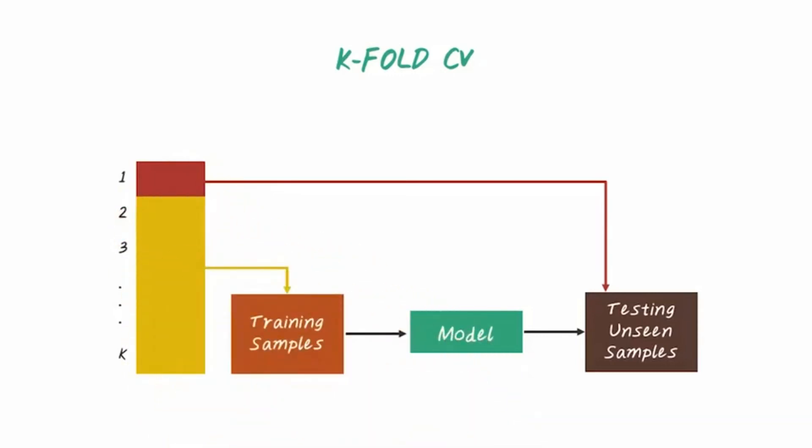For example, fold one would be used as the validation set, and the remaining folds will be used as a training set to build the model. Then we use fold two as the validation set, the remaining folds as the training set to build another model. And repeat this process k times, and the final performance is the average over these four different models.